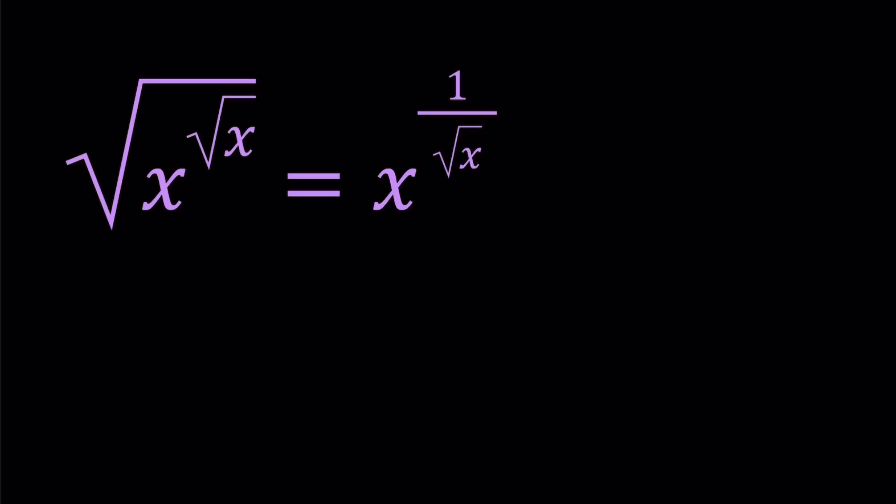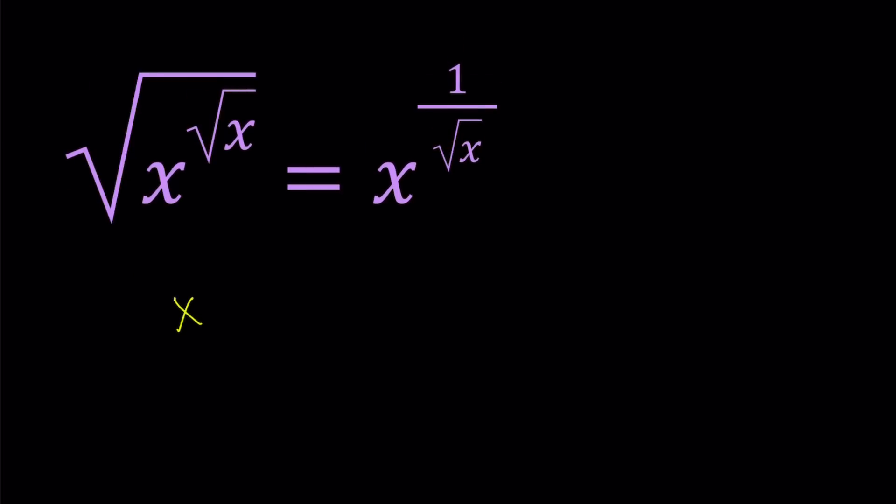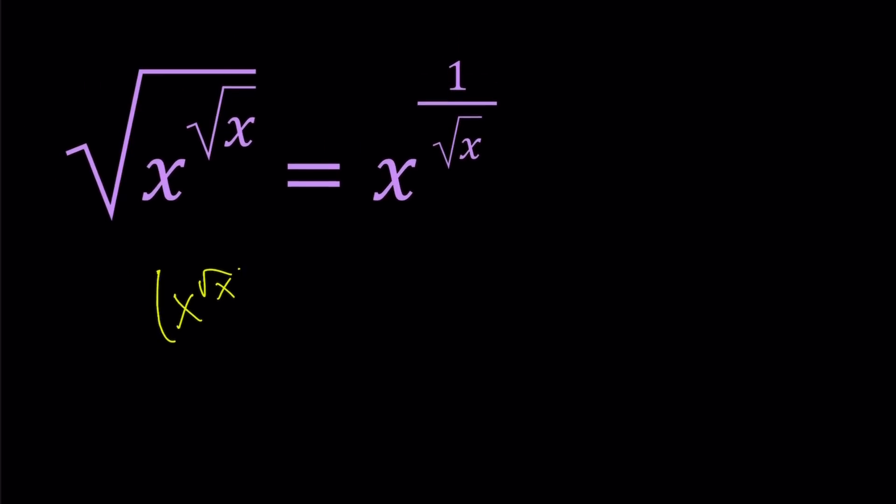So this is going to be a short video, so let's get started. First of all, I'd like to write the square root on the outside as to the power 1 half. So let's go ahead and write this as x to the power square root of x to the power 1 half, which is the same thing as the square root. And then it's just going to equal x to the power 1 over square root of x.